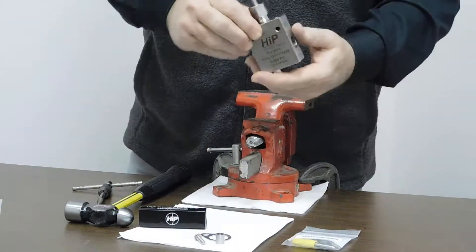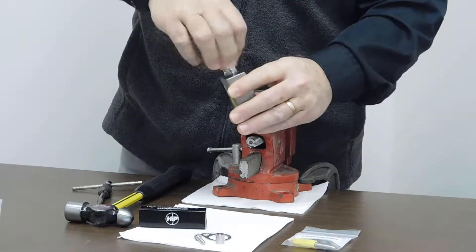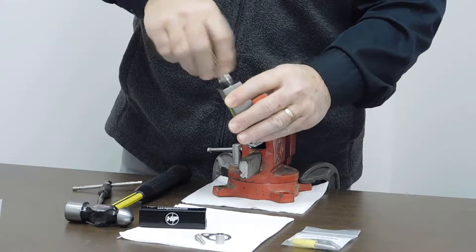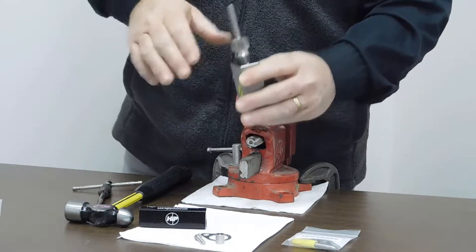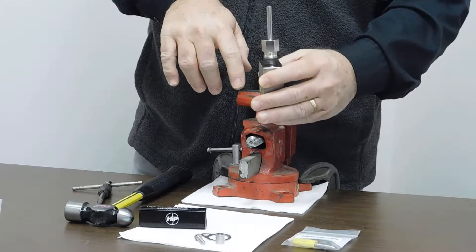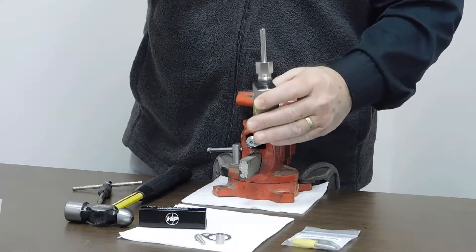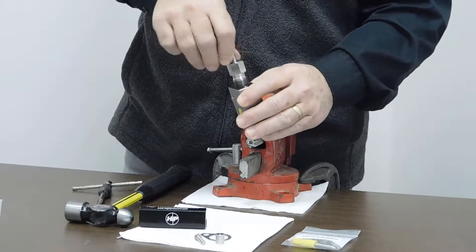The first thing we're going to do today is take the packing gland and stem assembly out of the body. When we do that, we simply rotate it counterclockwise and pull this out. Now there's two scenarios that can happen here. All the washers can stay down inside the block or sometimes, if we're lucky, all the washers and packing come out. Let's see what happens here today.